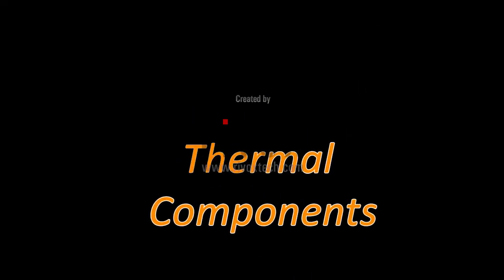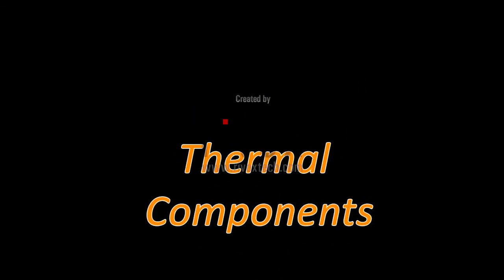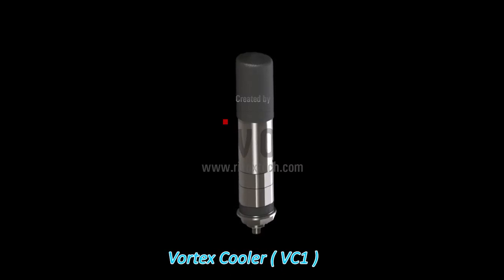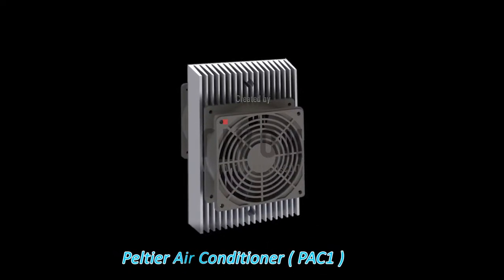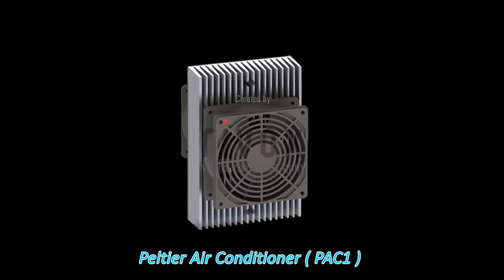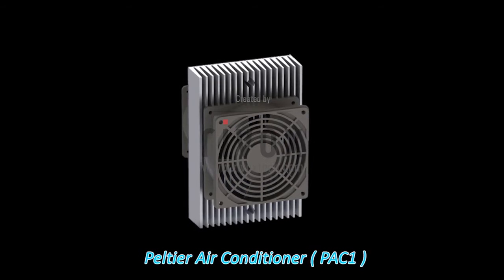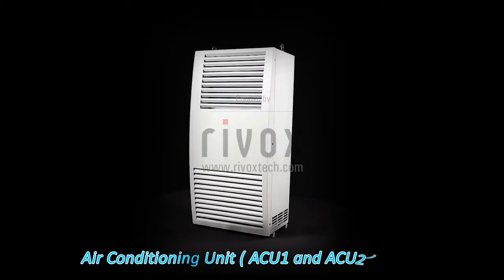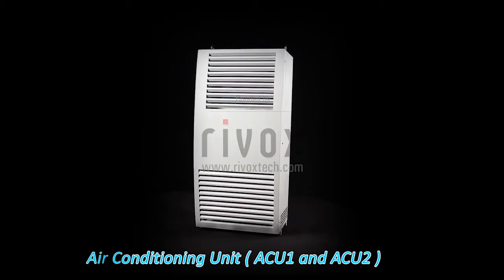Thermal components: Vortex cooler VC1 requires no electricity for operation. Peltier air conditioner PAC1 can be mounted on enclosures while maintaining IP rating without cutout. Air conditioning units ACU1 and ACU2 are also available.